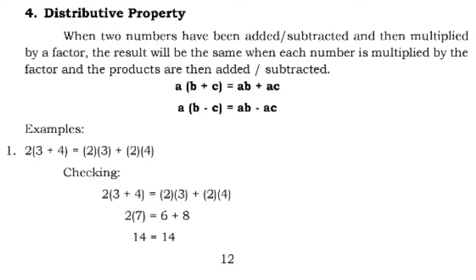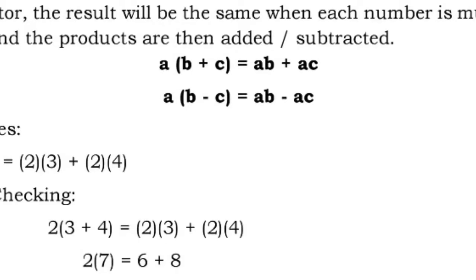Next is the distributive property. When two numbers have been added or subtracted and then multiplied by a factor, the result is the same when each number is multiplied by the factor and the products are then added or subtracted. In symbols: A times the quantity of B plus C equals A times B plus A times C. For subtraction: A times the quantity of B minus C equals A times B minus A times C. You just distribute A to each of the terms inside the parentheses.